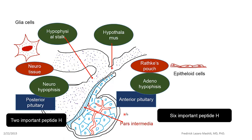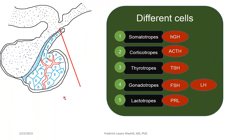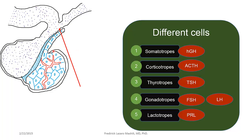The anterior pituitary secretes six important peptide hormones that we will discuss. Within the posterior pituitary there are two important peptides, but note that these hormones are not synthesized in the posterior pituitary — they are actually synthesized in the hypothalamus. This is where you have what is called the neuroendocrine effect, because they are synthesized in the hypothalamus and then transported in the axon and secreted within the posterior pituitary.